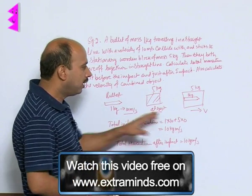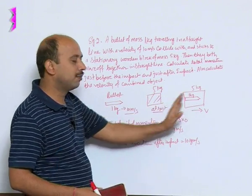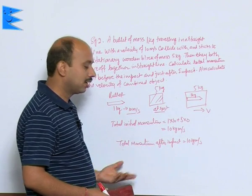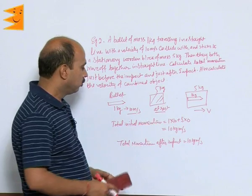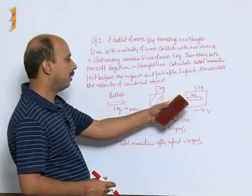So now bullet has embedded into the block and they are moving together. So we can calculate the final velocity, velocity of the combined object. So easily you can calculate velocity of combined object.